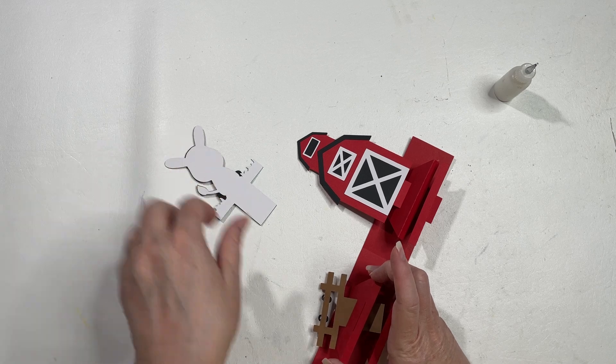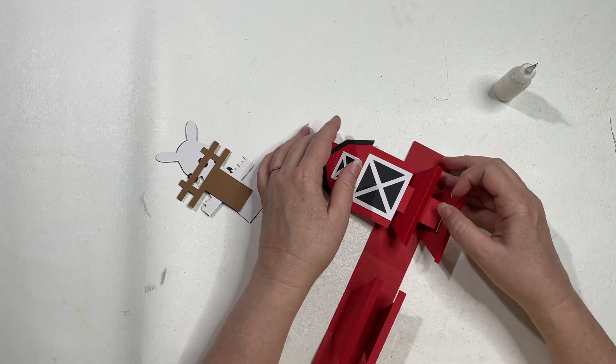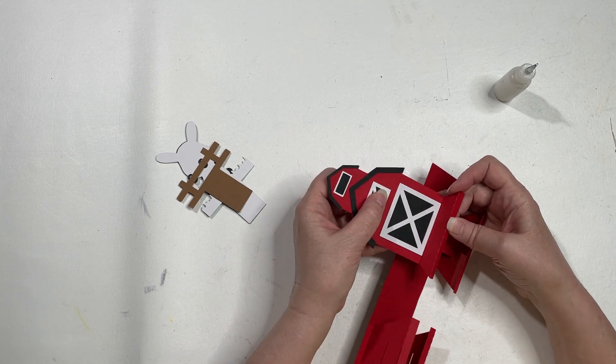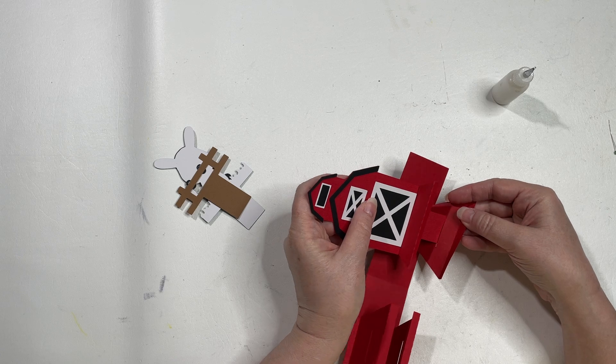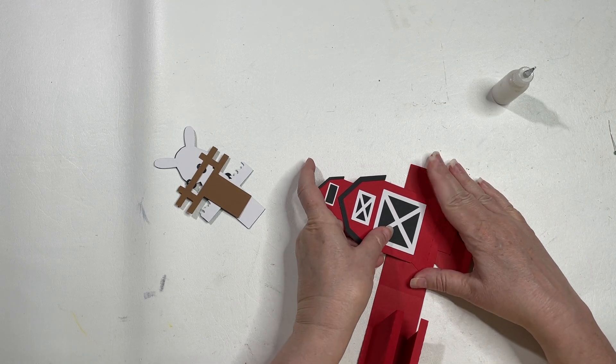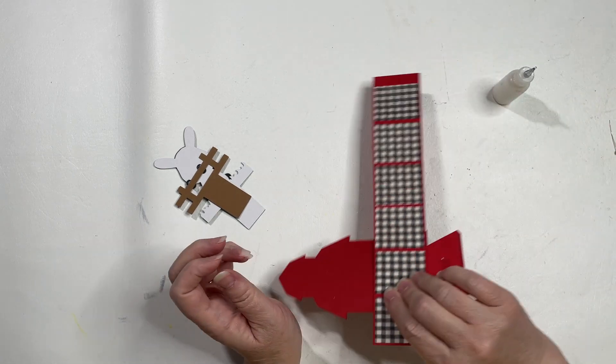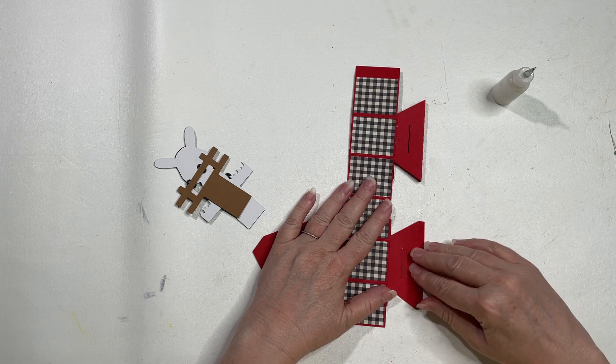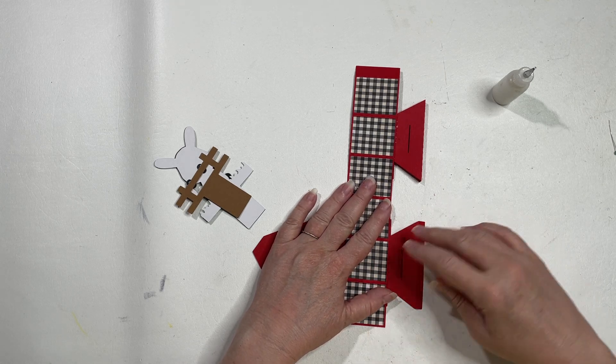You want to take your barn through the top and then down and through the bottom. We're going to flip it over, and you're going to fold your tab up and glue it to the bottom.